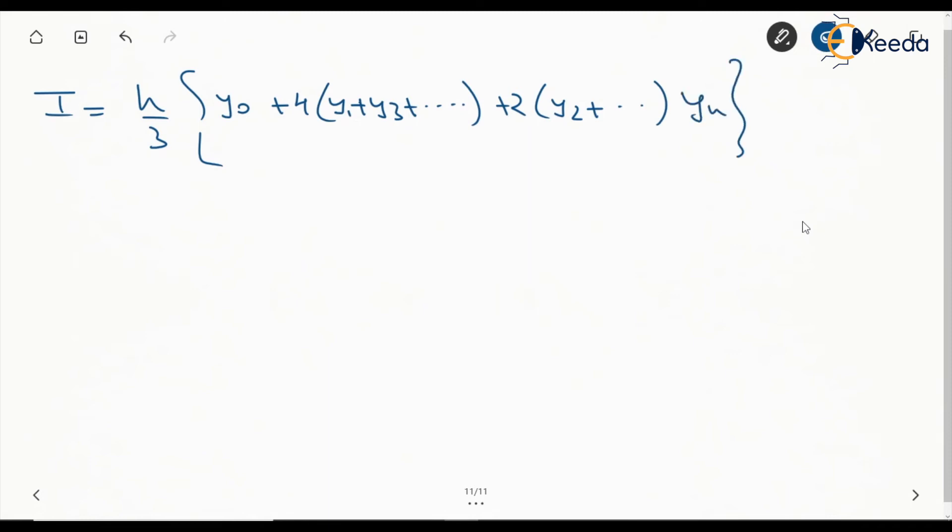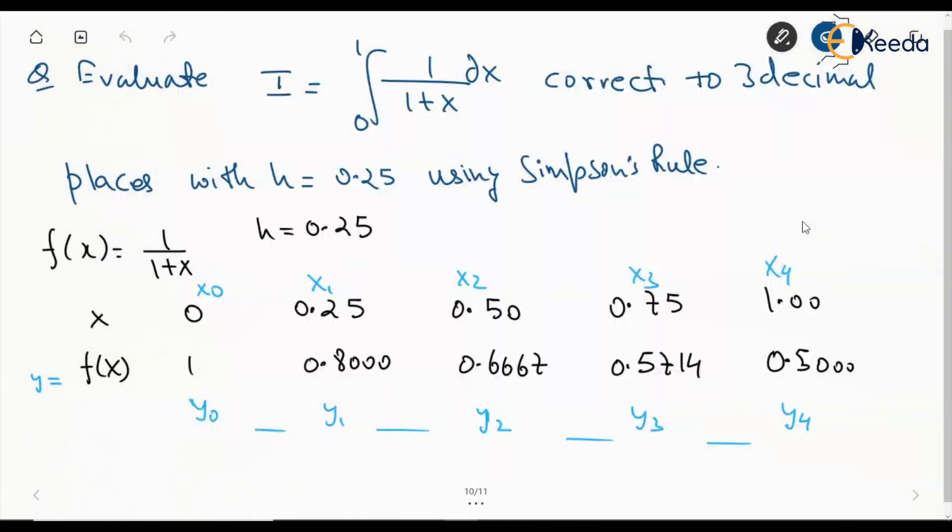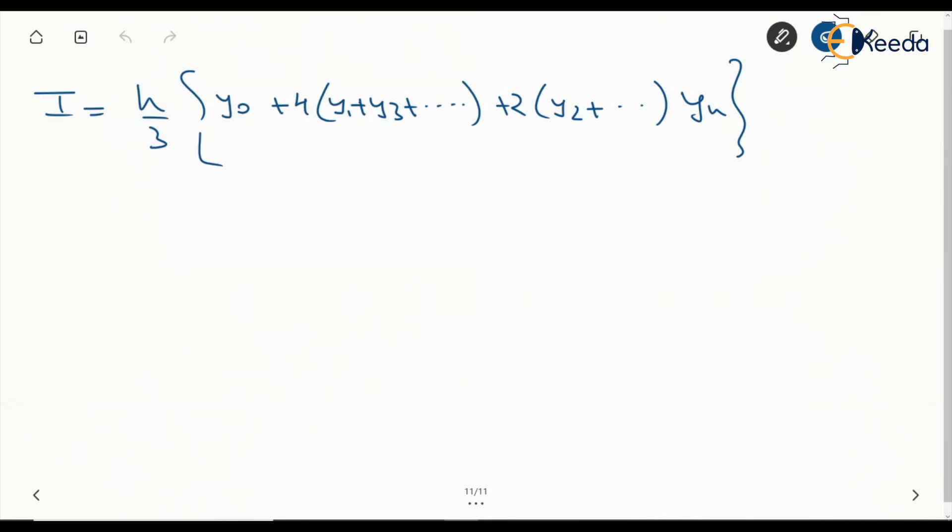Now in this case, this is y₁, this is y₃, this is the one which will be multiplied with 2, this is the first term and this is the last term. Which means we cannot have y₄ here because y₄ will come here. So this becomes 0.25 by 3.